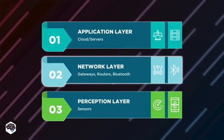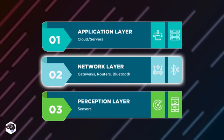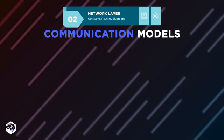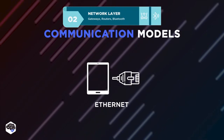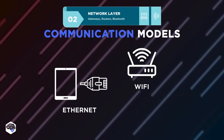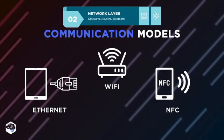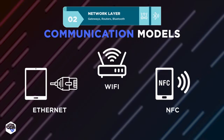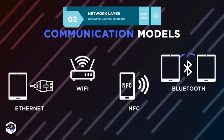The network layer helps establish the logical design of IoT by connecting devices with the platform. Among the most popular IoT communication models are Ethernet, which is a secure way to connect IoT devices using a wire; Wi-Fi, as a wireless network and one of the most convenient ways to connect IoT devices; NFC, which ensures fast and hassle-free data transfer between two IoT devices; and Bluetooth, which helps transfer data consuming low amounts of power.